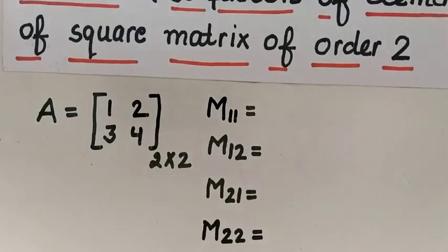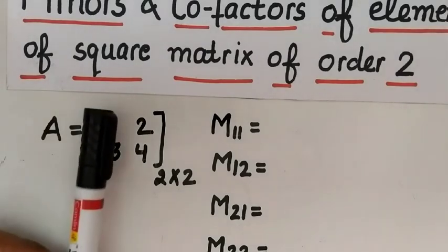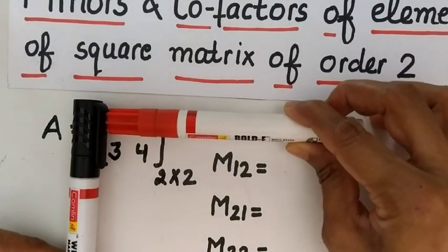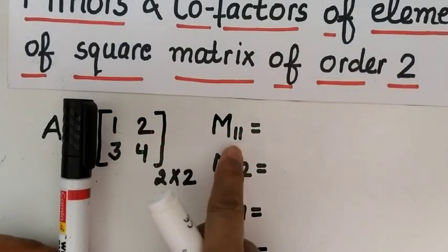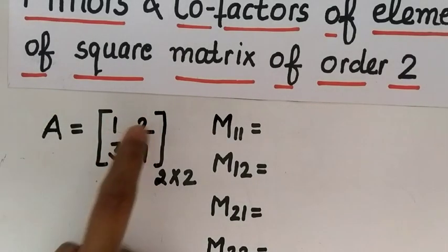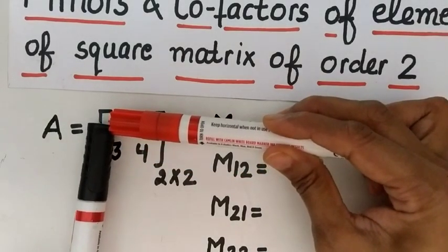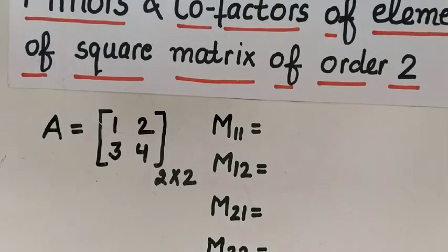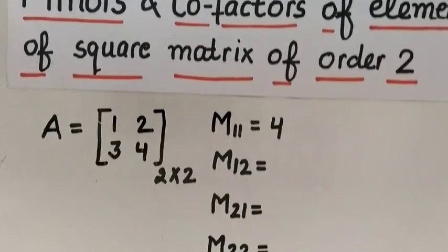To find minor M11, we delete the row and column in which element a11 lies. After deleting, the remaining element is 4. So M11 equals 4.